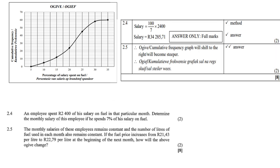So 2.4, an employee spent 2400 of his salary on fuel in that particular month. Determine the monthly salary of this employee if he spends 7% of his salary on fuel. So therefore you'll find 7% which is then 100 over 7 times 2400. And that should give you 34285.71.